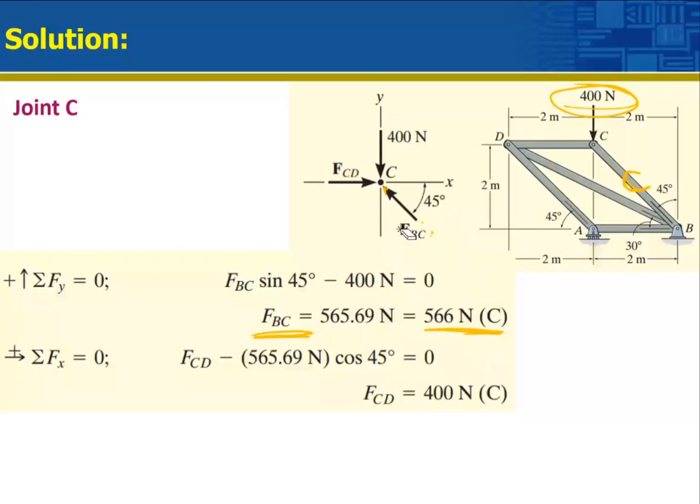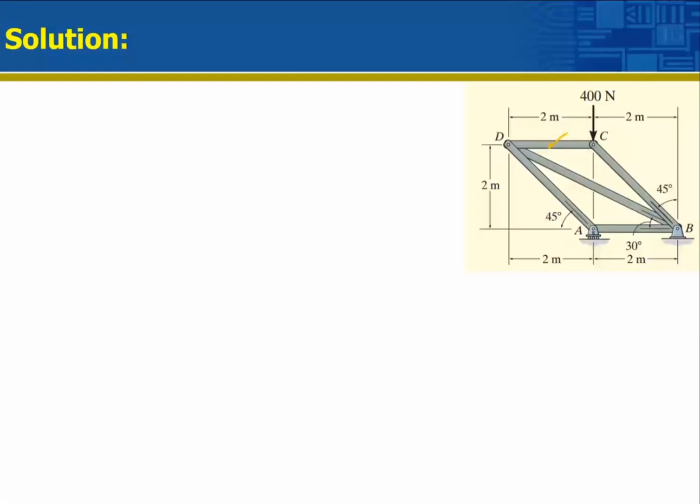If I look at FCD, that's force being applied here. And if I look at the member, for the member, the force is being applied in this direction. So my CD will be in compression. So yes, this is also in compression. So now I know DC and BC. Question is, which joint to take now? I know the value of this one and this one. So I cannot go to A. I cannot go to B. Can I go to D? D, I have got one known and two unknowns. D is the right place to continue. So that's my D.